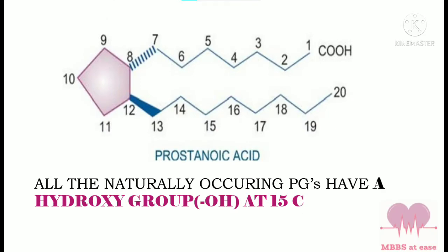Before that we must know about prostanoic acid. It is a 20-carbon compound having a saturated cyclopentane at positions 8 and 12. All naturally occurring prostaglandins have an alpha-oriented hydroxy group at the C15 position.